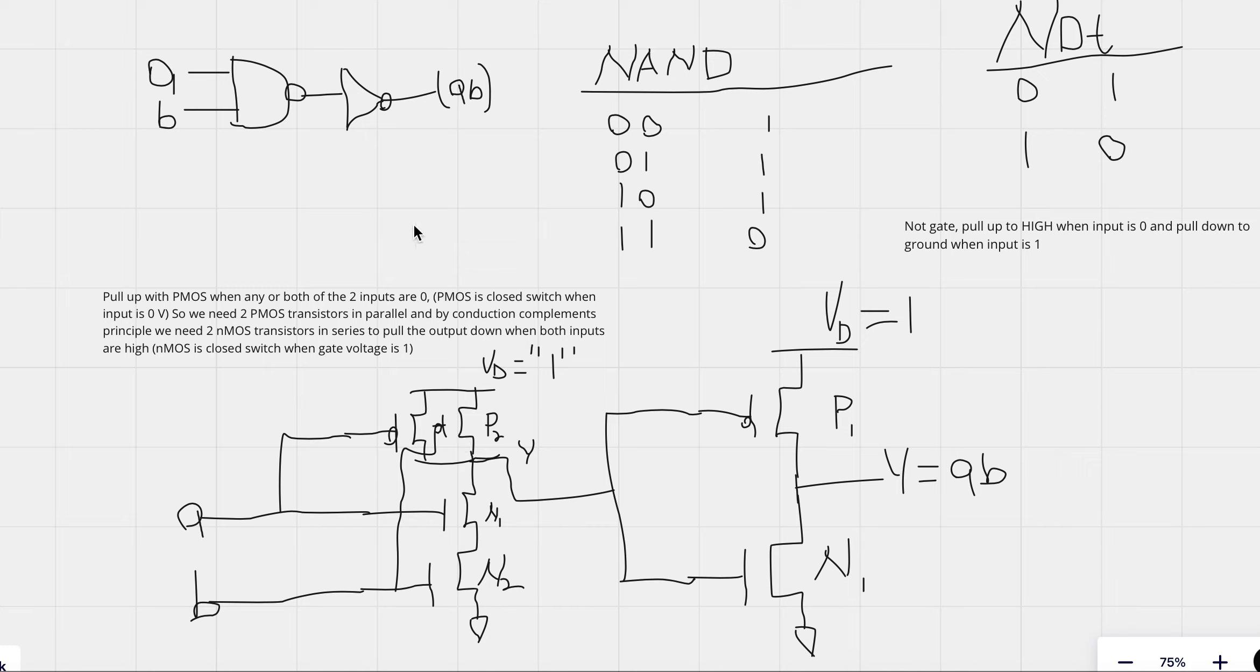So from the truth table of NAND, let's start with that. We need to pull it up to high when either of the inputs or both of the inputs are 0. So as this little note right here says, we will need two PMOS transistors in parallel, because as you can see, when both of them are 0, we should pull it up to high, or when either one of them is 0, we should pull it up to high. So we need those in parallel.